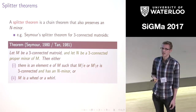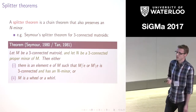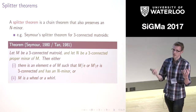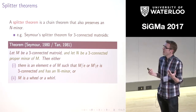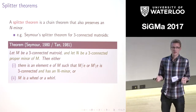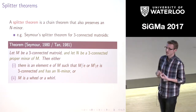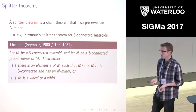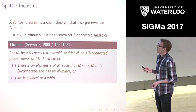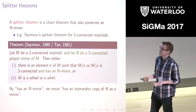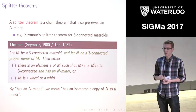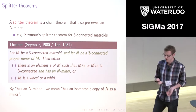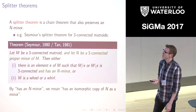For three-connected matroids, Seymour's splitter theorem tells us that if we have a three-connected matroid M and a three-connected proper minor N, then there exists some element that we can delete or contract, stay three-connected, and keep an isomorphic copy of the N minor. I'll sometimes just say that it has an N minor — I always mean we're keeping some isomorphic copy of the N minor, and this will become even more important as I go on.